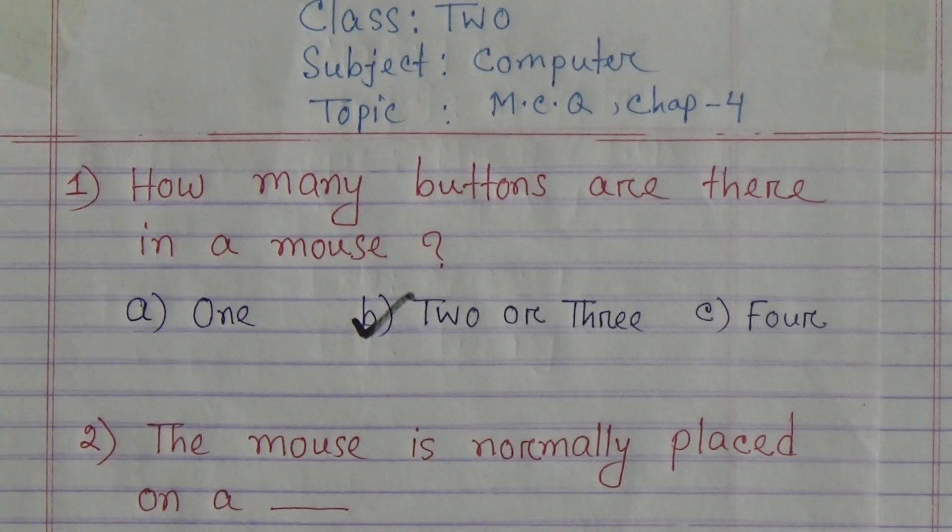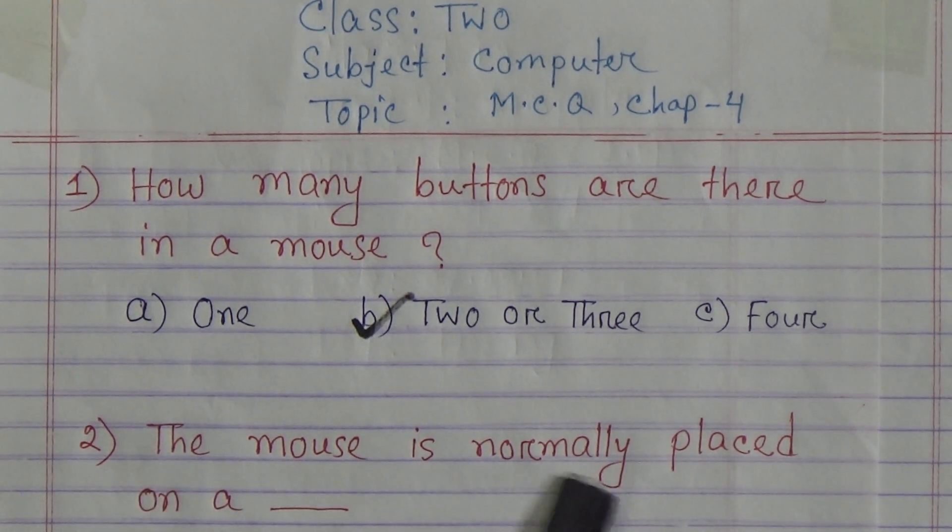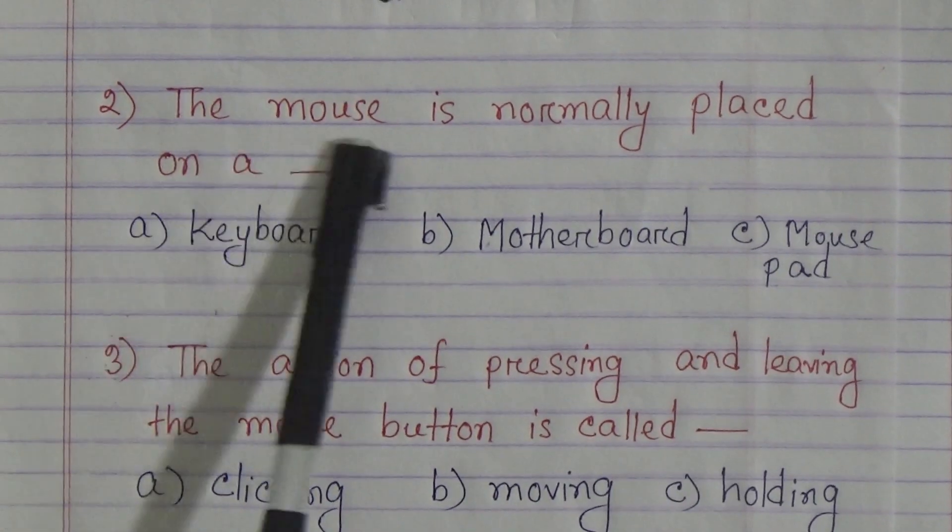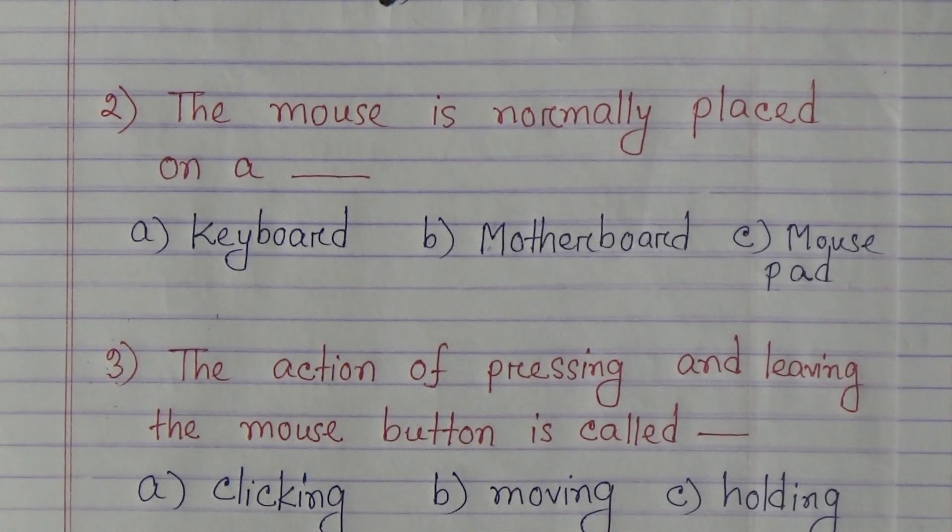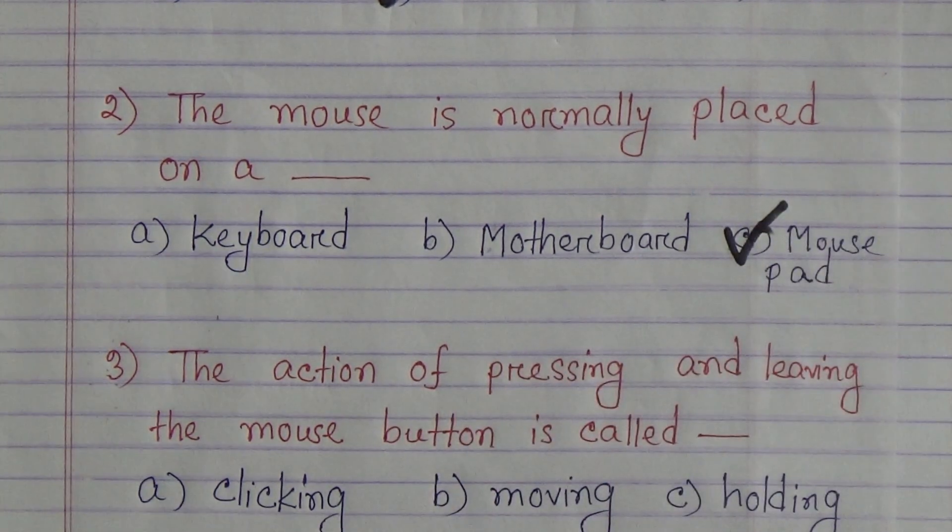Question number 2: The mouse is normally placed on a: Option A: Keyboard, Option B: Motherboard, Option C: Mouse pad. The mouse is normally placed on a mouse pad. Mouse pad is correct.